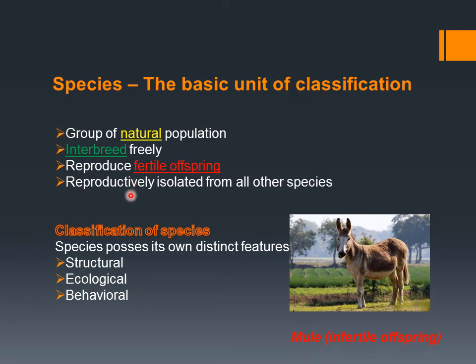Similarly, a species should be reproductively isolated from all other species — one species can only reproduce with the same species and cannot intercross with any other. For example, reproduction between horse and donkey produces a mule, but the mule is not fertile at all. This is the best example to prove these key points.